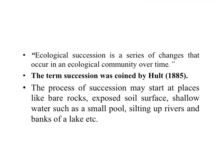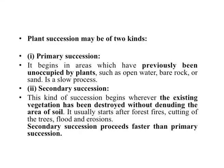The process of succession can start from bare rocks, soil surfaces, small pools, rivers, and different types of lakes. Plant succession may be divided into two kinds: one is primary succession and the other is secondary succession. Succession essentially means the replacement of some organisms — plants and different types of organisms.